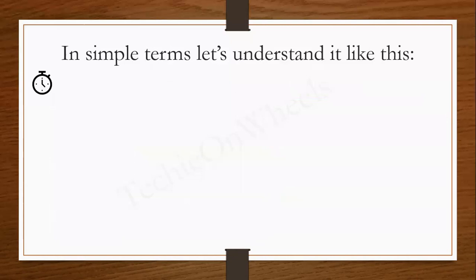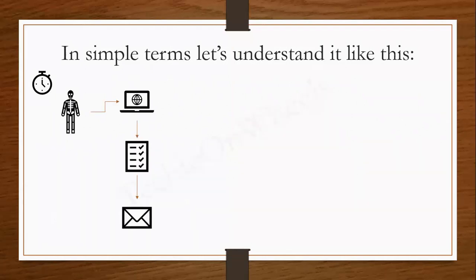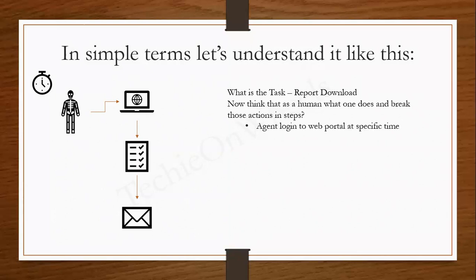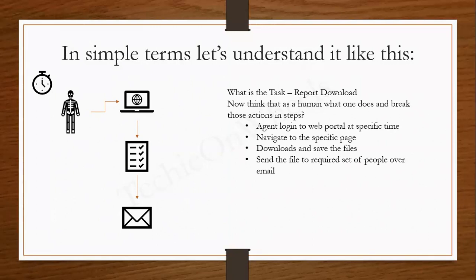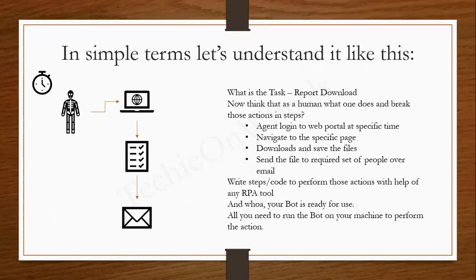Let's understand this with the help of an example. Say there is a process where an agent has to log in every day at 4 o'clock to a specific portal, download a report from that portal, and send it over email to a specific set of people. The steps are: log into the web portal at 4 o'clock daily, navigate to a specific page, download the report, save the file on the system, and send it to specific people over email. Once all these steps are coded, it is referred to as a bot. You trigger your bot and it performs all actions without any human intervention.